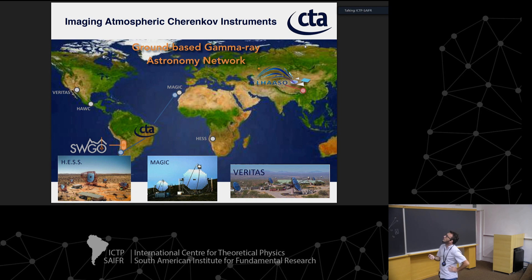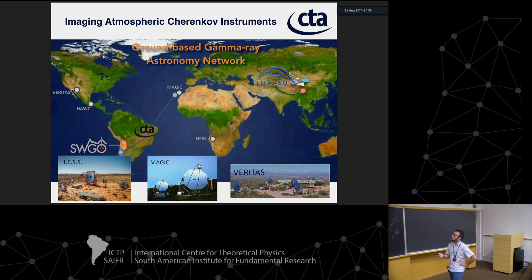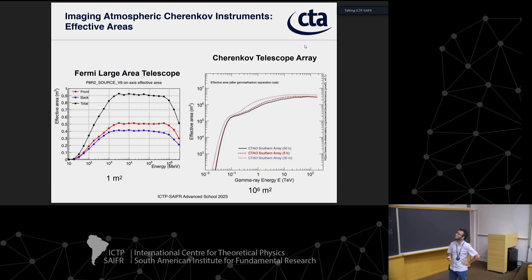The current scene of ground-based gamma astronomy: the three operating IACTs are H.E.S.S. — the only one in the southern hemisphere — MAGIC in the Canary Islands where CTA is also going to be installed, and VERITAS in New Mexico. Then you have two operating water tank arrays, HAWC and LASSO, plus SWGO which we are planning in the Andes. CTA is going to have two sites as already discussed.